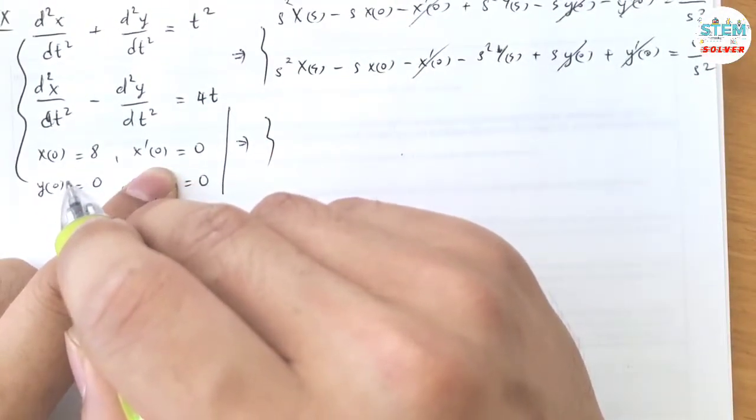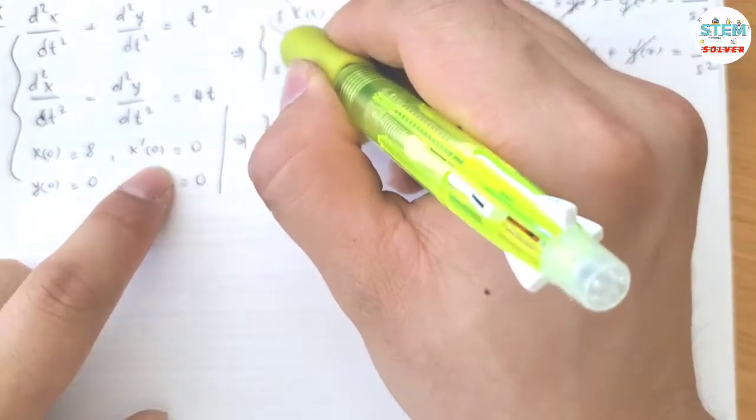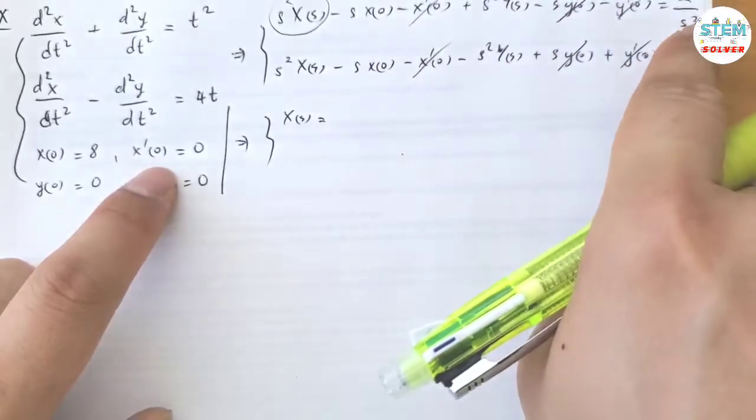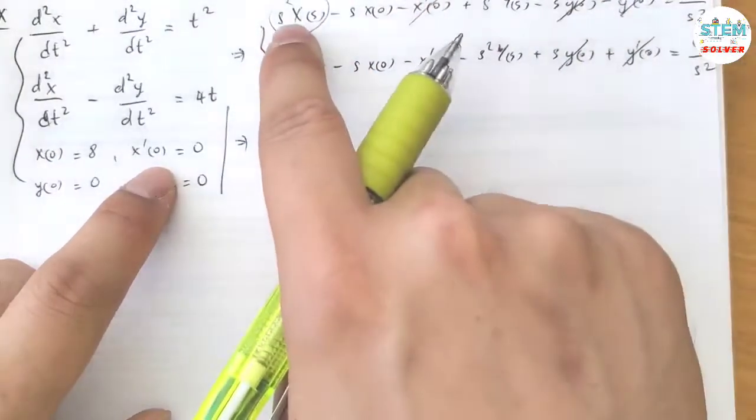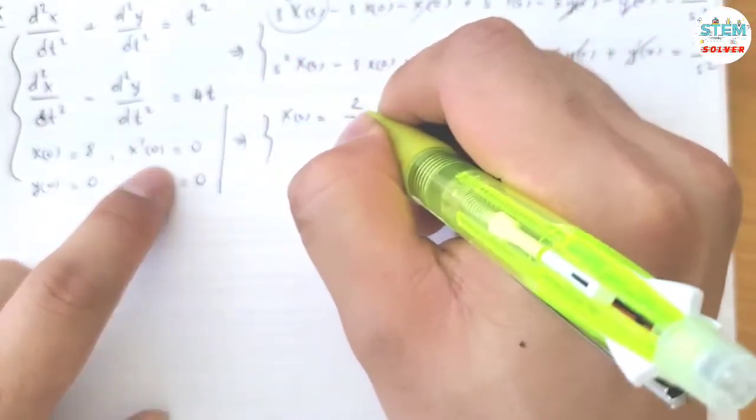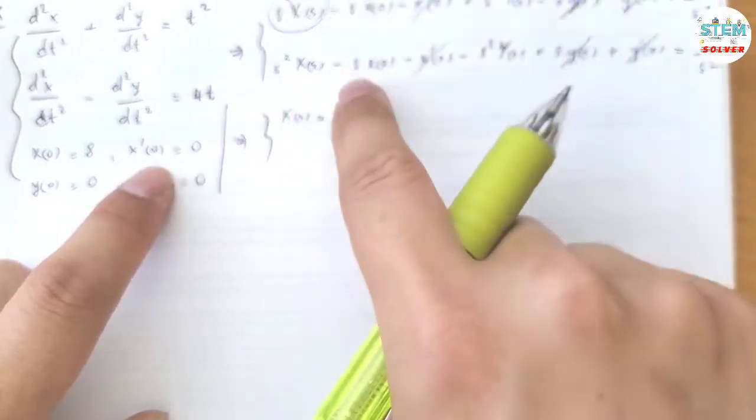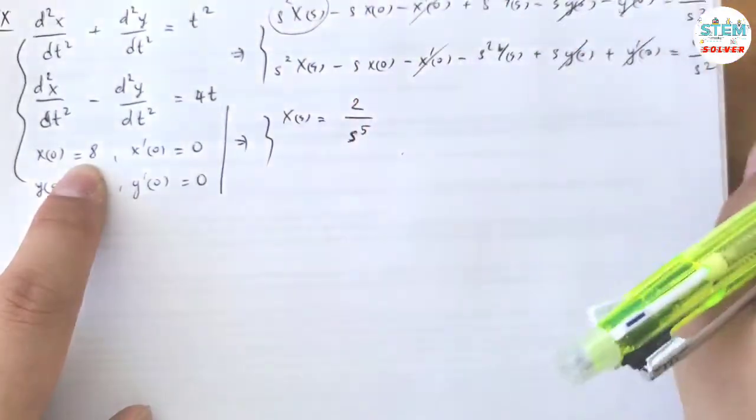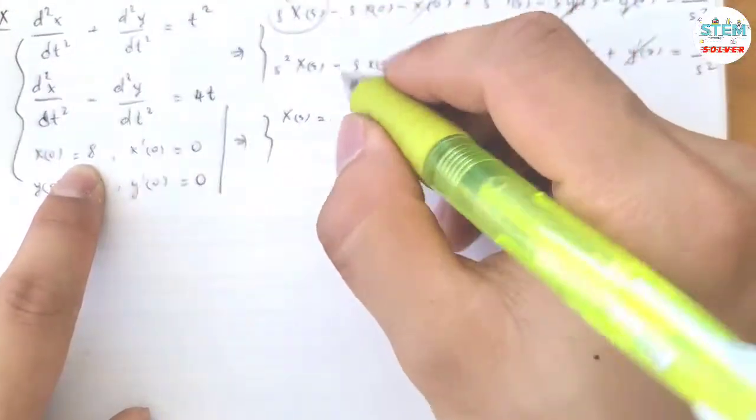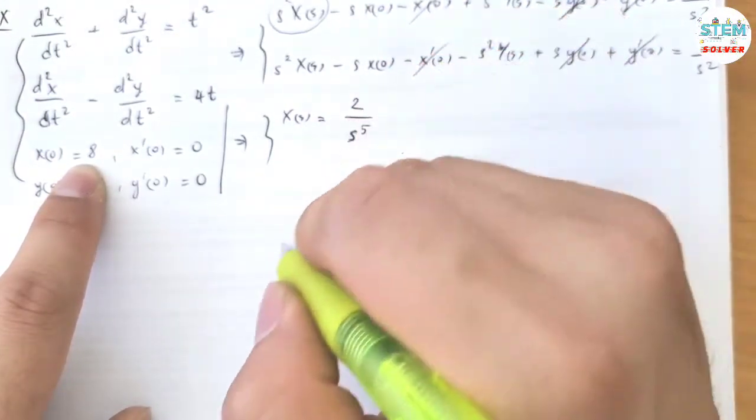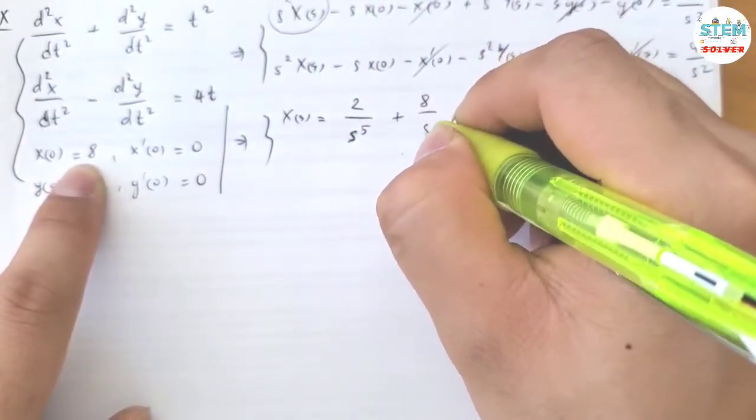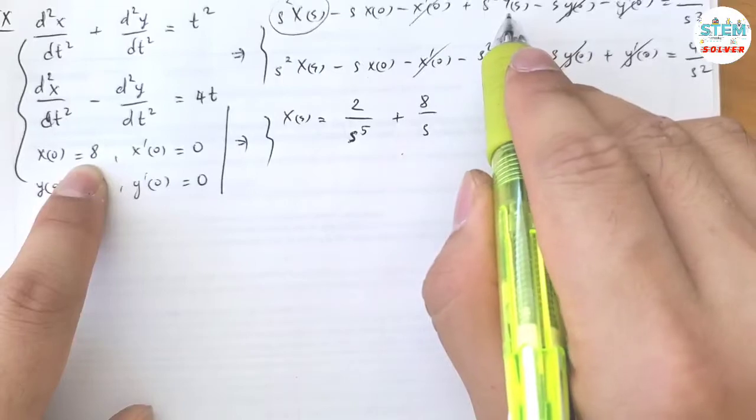Let's solve for X(s). I have 2 over s cubed divided by s squared, 2 over s to the fifth. And for this one, x(0) equals 8, so negative 8, positive 8, positive 8 over s squared. Now positive 8 over s squared which is positive 8 over s.